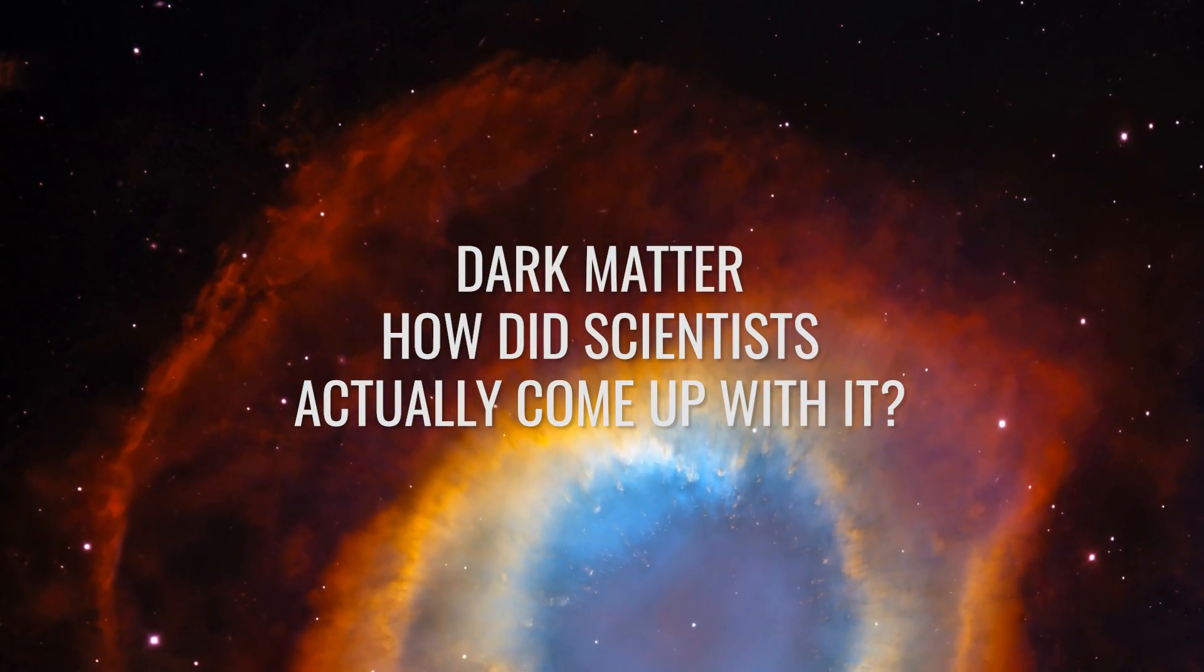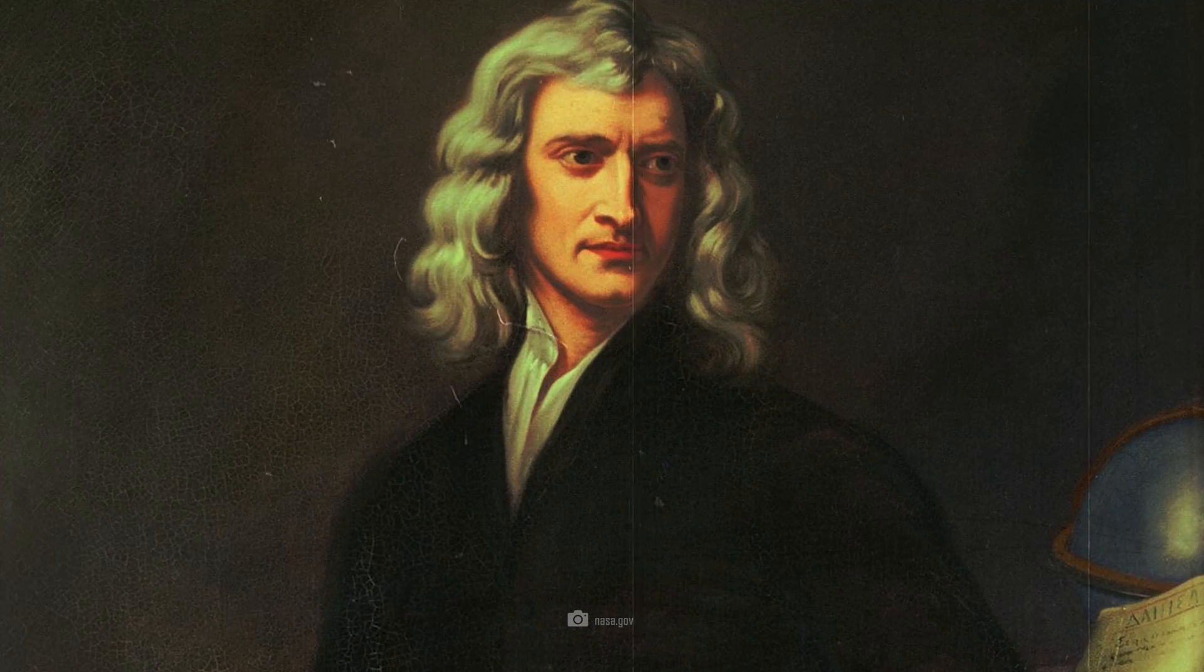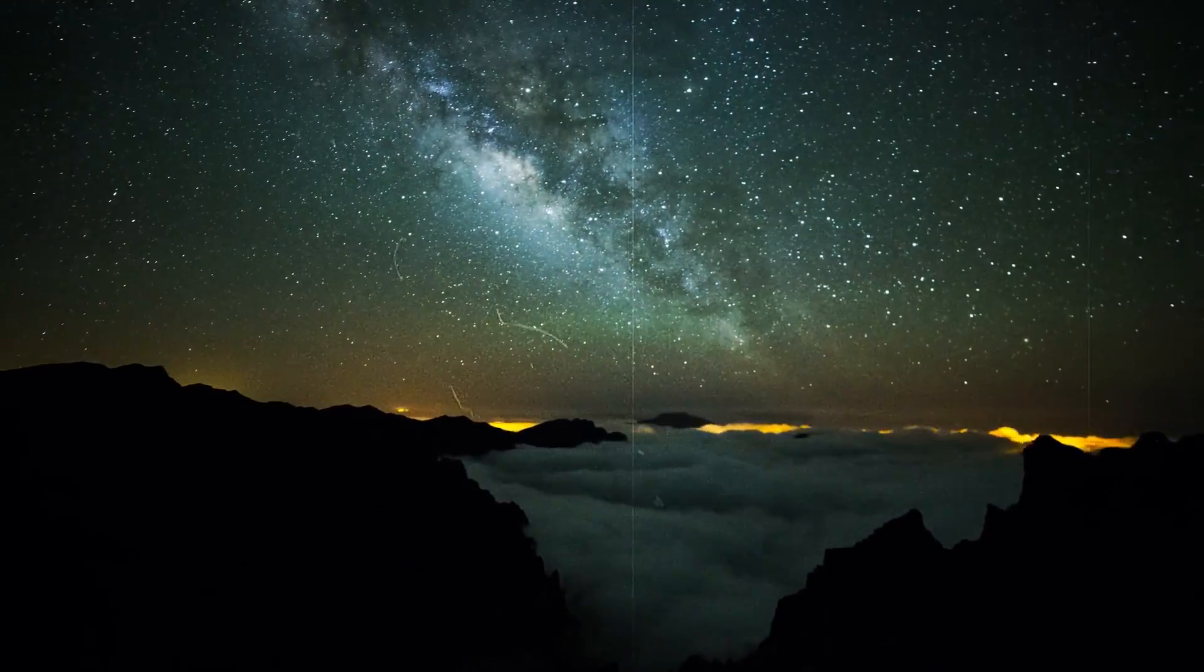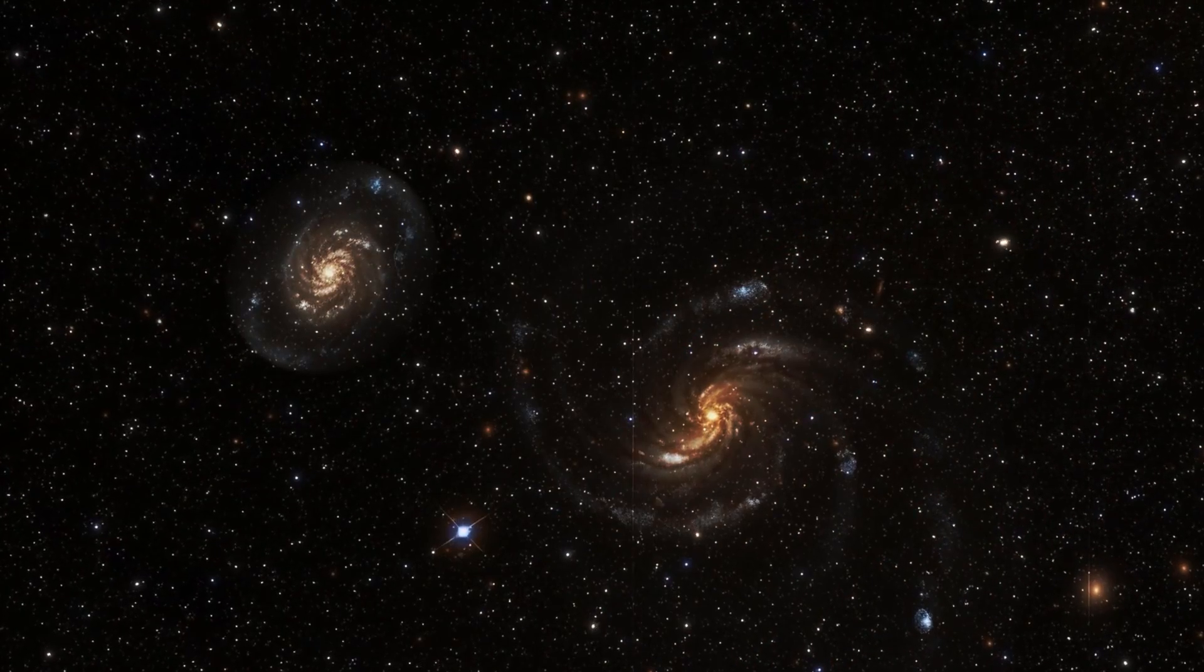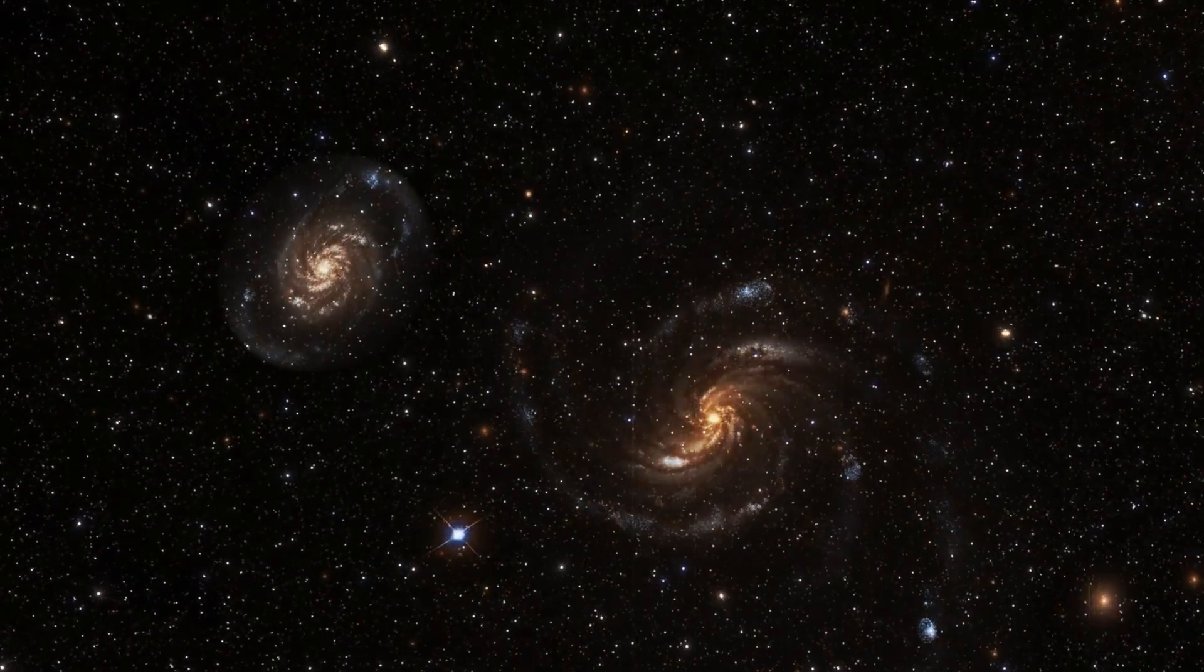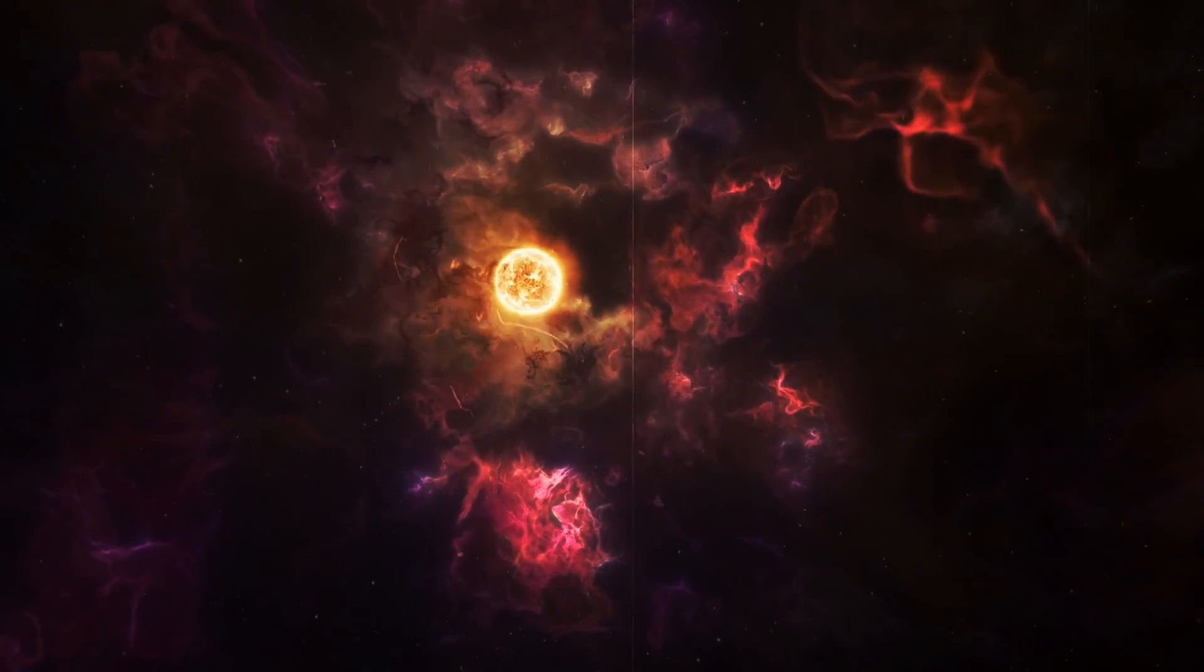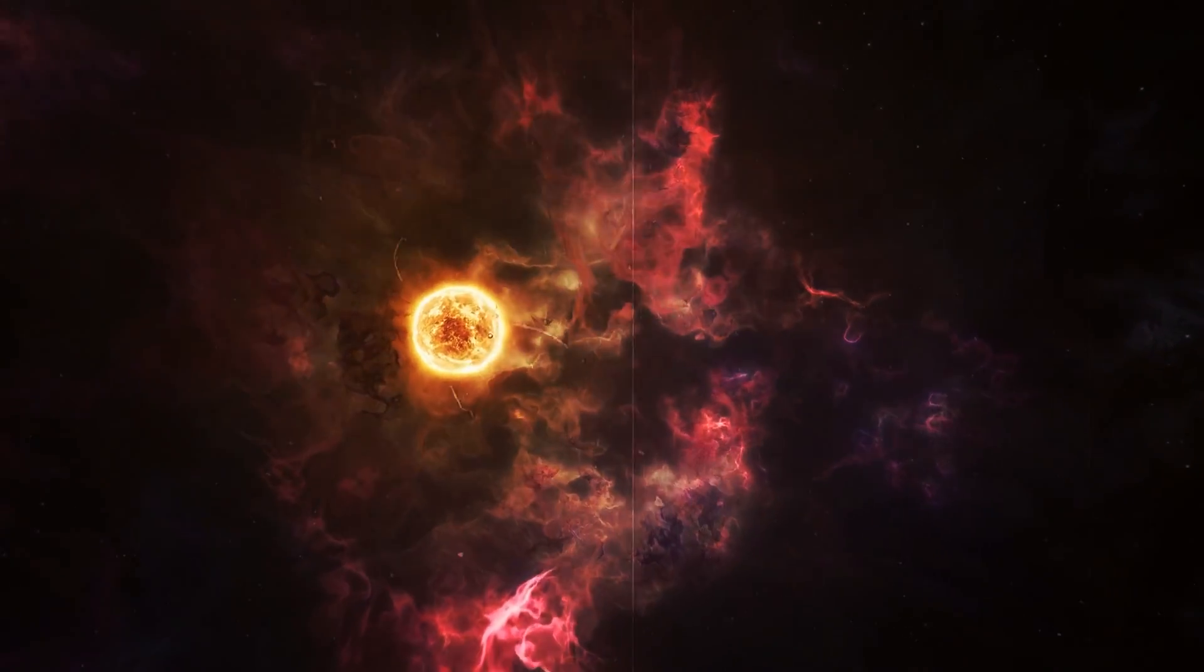Dark matter. How did scientists actually come up with it? Who would have thought that the history of dark matter actually began with Sir Isaac Newton in the 17th century? Newton revolutionized our understanding of the natural world with his theory of universal gravitation. It simply states that all objects in the universe attract each other through gravity. Gravity is proportional to the product of their masses and inversely proportional to the square of their distance.